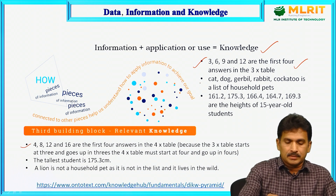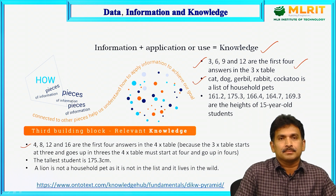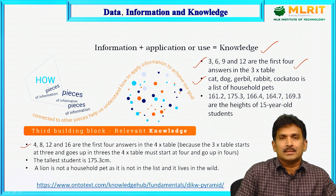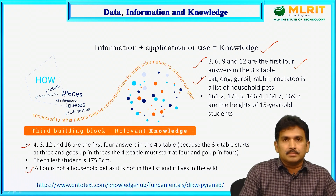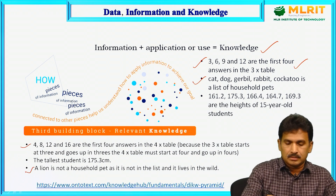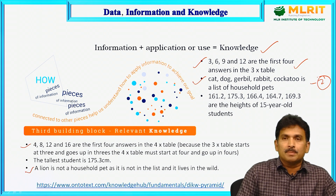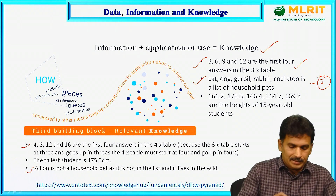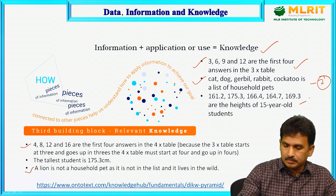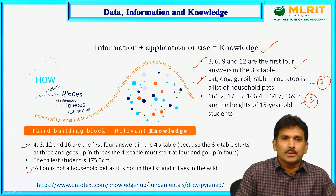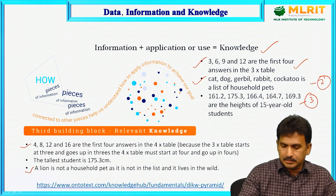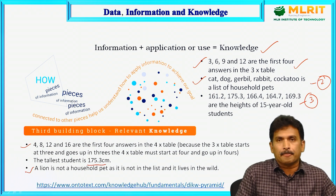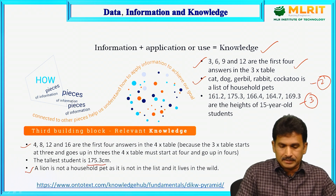Similarly, based on the second information — that cat, dog, gerbil, rabbit and coccato are household pets — we could obtain the knowledge that a lion is not a household pet, as it is not in the list and it lives in the wild. And based on the third information, we could say that the tallest student height in the class is 175.3 centimeters. This is the knowledge extracted from the information.